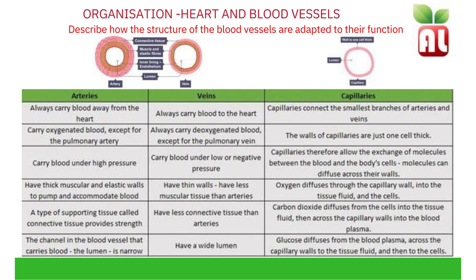Veins have a wider lumen. They always carry blood into the heart. They carry deoxygenated blood except for the pulmonary vein, and they carry blood under low pressure. They have thin walls with less muscular tissue and less connective tissue than arteries, and a wider lumen. They also have valves to prevent backflow of blood, to ensure that blood flow is only in one direction, as it is under low pressure.